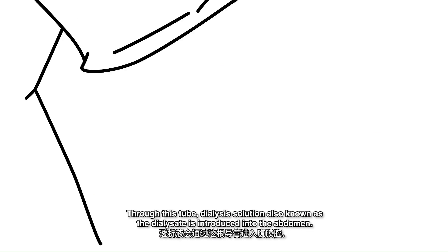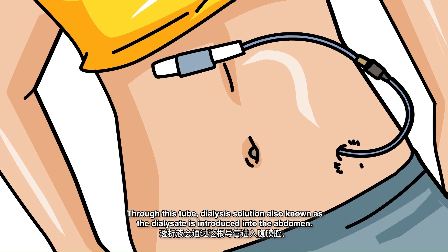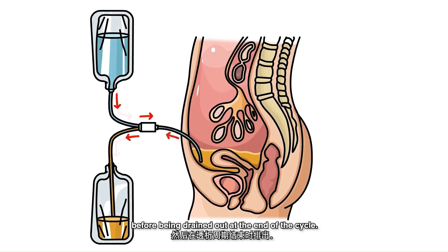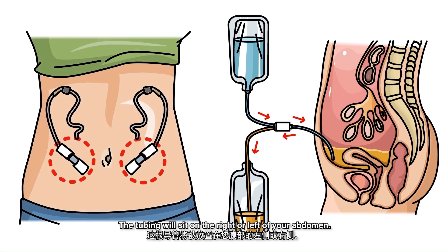Through this tube, dialysis solution also known as dialysate is introduced into the abdomen. The solution is circulated through the abdomen to remove toxins and extra water before being drained out at the end of the cycle. The tubing will sit on the right or left of your abdomen.